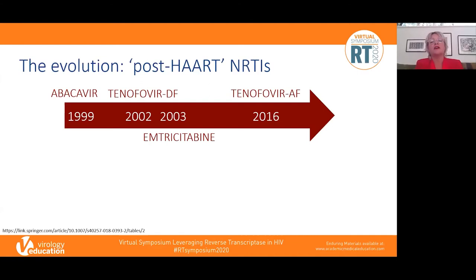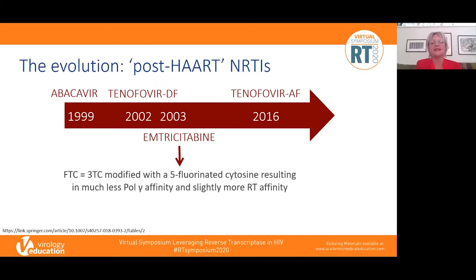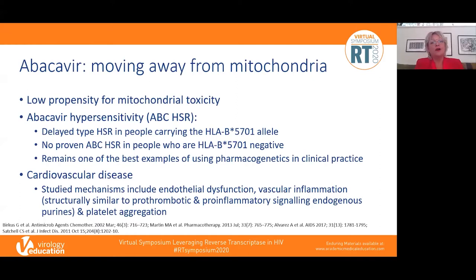What about the post-HAART NRTIs? Here we have abacavir, tenofovir DF, and emtricitabine, and then a large gap until tenofovir AF licensed in 2016. From a pharmacological perspective, emtricitabine is modified 3TC with the addition of a 5-fluorinated cytosine, meaning it has less affinity for polymerase gamma — already low — and slightly more reverse transcriptase affinity, which may account for a slightly higher genetic barrier in clinical studies.